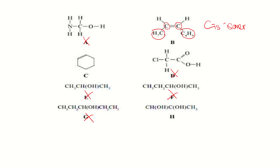Looking at C: it has a double bond, but because one carbon only has three bonds shown, there must be a hidden hydrogen in the skeletal form. The two big groups on one carbon are connected to the ring structure on the other side, so you can't flip them to form cis or trans — you can't get geometrical isomers. So C is out.